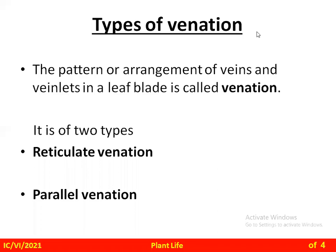This is the continuation part of the plant life. Today we are going to study about venation. Venation is the pattern or arrangement of the veins and veinlets in a leaf blade or lamina. The midrib branches out to form veins, and veins which again branch out to form many veinlets in a leaf blade. This pattern and arrangement we call venation.